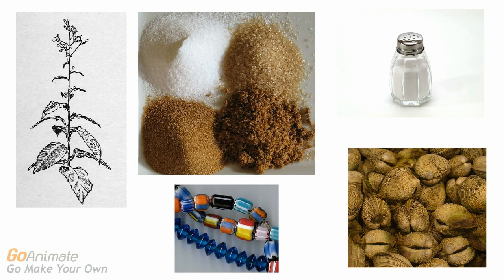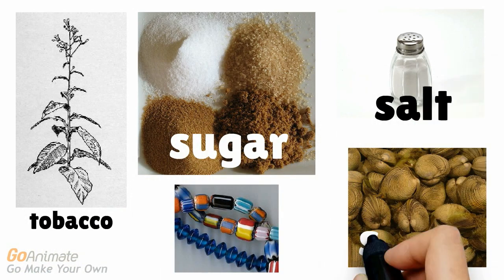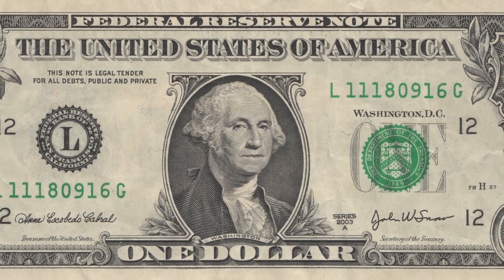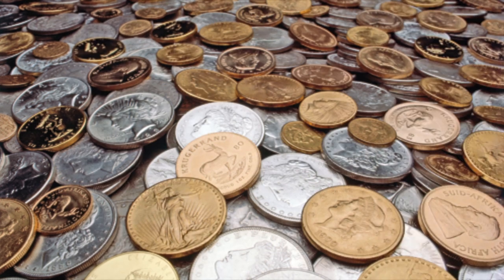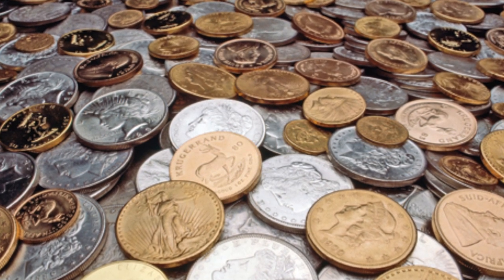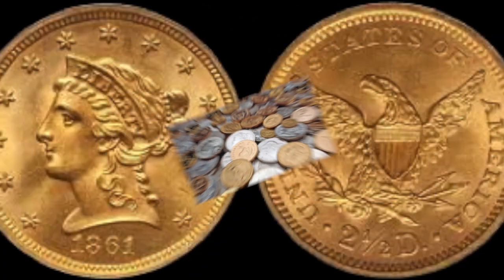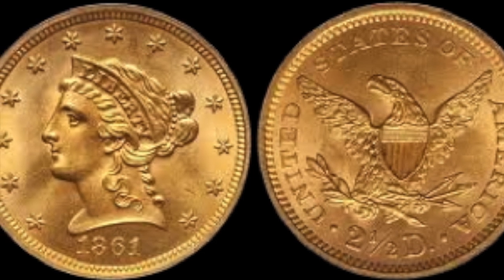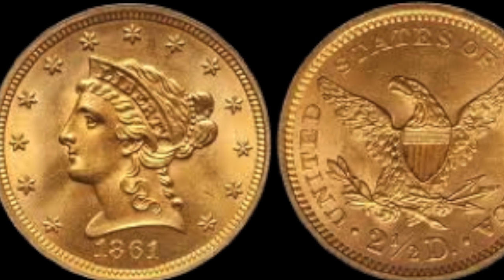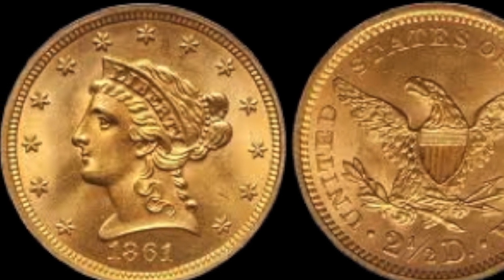Over the years, many different commodities have served as money: tobacco, sugar, salt, shells, beads, and pieces of paper with politicians' faces on them. But two dominant commodities have been used the most — gold and silver — because they perfectly satisfy the five characteristics, and for good reason. Gold has ornamental value and can be easily divided and carried around. Only certain acids can destroy it. Everyone knows this yellow metal when they see it, and there is a limited supply of gold in the world, which makes it scarce.